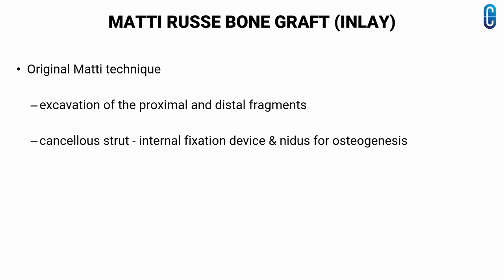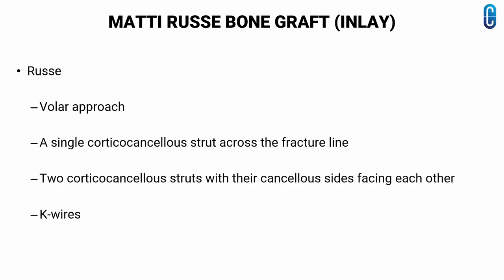The original Matti technique, described in 1937, consisted of excavation of the proximal and distal fragments through a dorsal approach and placement of a cancellous strut within these two cavities to act as internal fixation as well as a nidus for osteogenesis. In 1960, Russe described a volar approach. While the initial procedure used a single corticocancellous strut across the fracture line, a later modification involved two corticocancellous struts inserted into the scaphoid excavation with their cancellous sides facing each other, with the remainder of the cavity filled with cancellous chips.